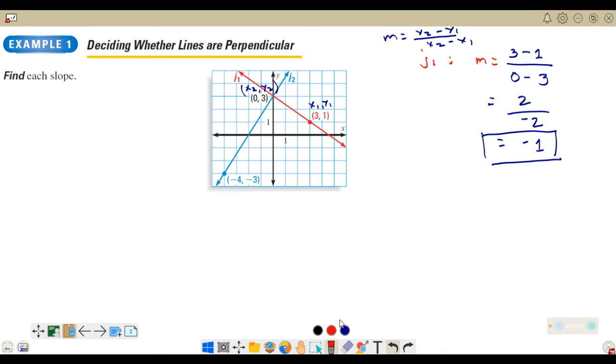Let's check J₂. J₂ has the slope—again, this is (x₁, y₁). x₂ is still 3, y₂ is still 3. y₁ is negative 3, so minus negative 3. For the denominator, we have x₂ is 0 minus negative 4. 3 minus negative 3: you will end up with 3 plus 3. For the denominator, we have 0 minus negative 4, which is 0 plus 4. 3 minus negative 3 is 3 plus 3, which is 6. The denominator is 0 plus 4, which is 4, or 3 over 2.